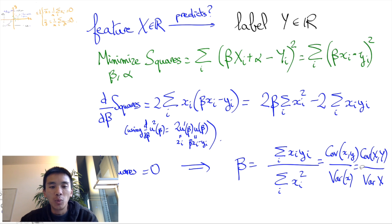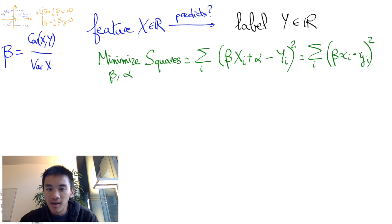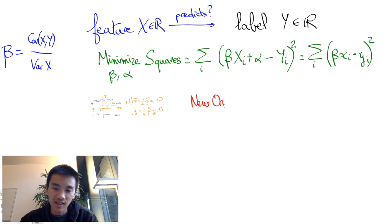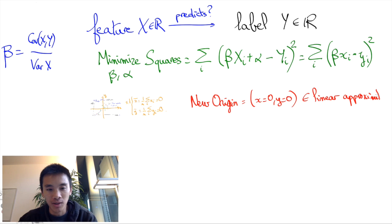Finally, we can simply retrieve the value of alpha using a geometric argument. We know that small x equals 0 and small y equals 0 defines a point that is on the best linear approximation. Now in the old coordinate system, the coordinates of this point are the average value of the x_i's, of the capital X_i's, which is bar X, and the average of the capital Y_i's, which is bar Y.